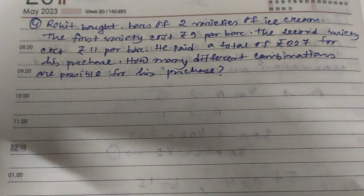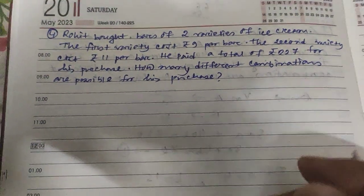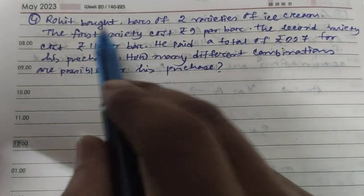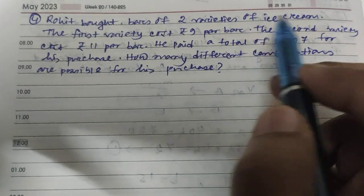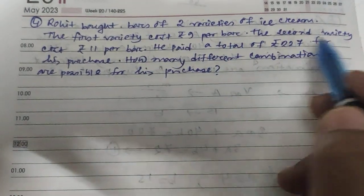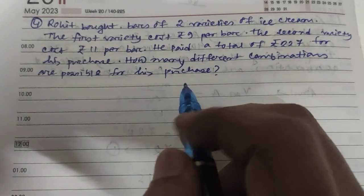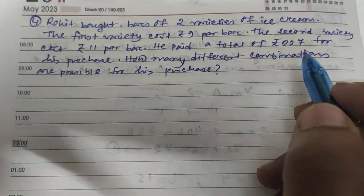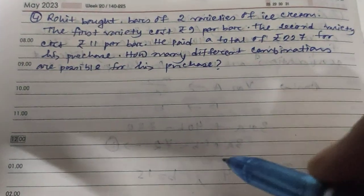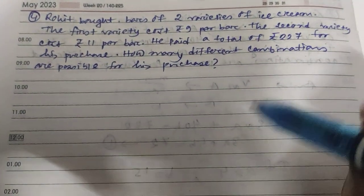Hi everyone, this is our 4th video for special equations. So the question is, Rohit bought bars of 2 varieties of ice cream. The first variety cost 9 per bar, the second variety cost 11 per bar. And he paid a total of 227 for his purchase. How many different combinations are possible for his purchase?